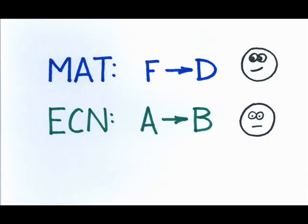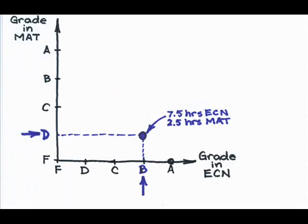What if you begin to spend a little time each week on math? Maybe you start spending about two and a half hours on math, and cut back to seven and a half hours in economics. Well, the math grade is going to go up, and that's good news. Now you're at least getting a D in math. But because you took time away from economics, the economics grade is going to fall from an A to a B.